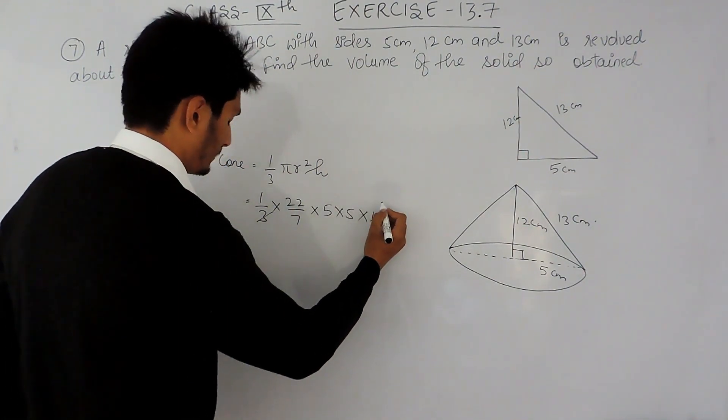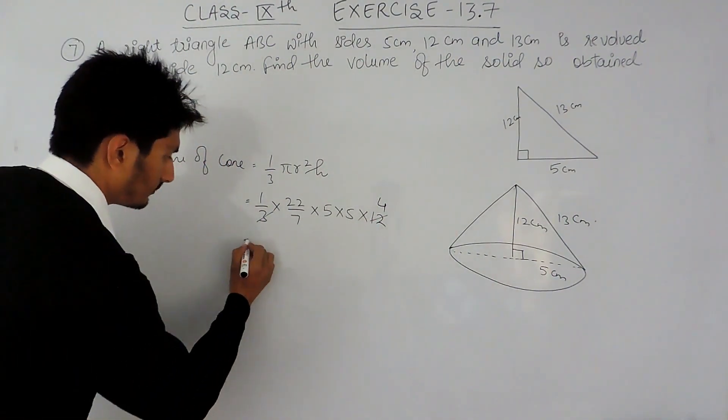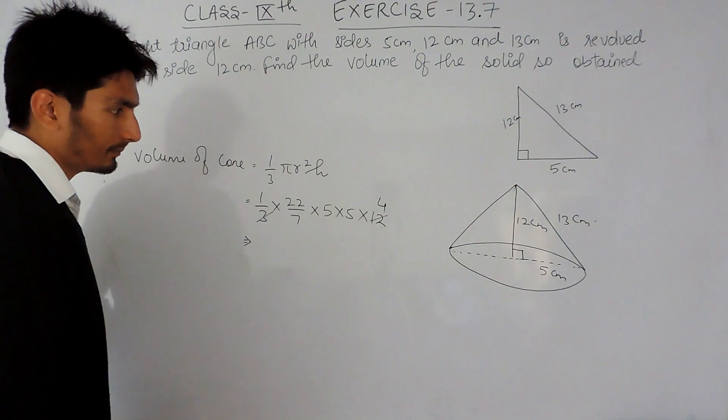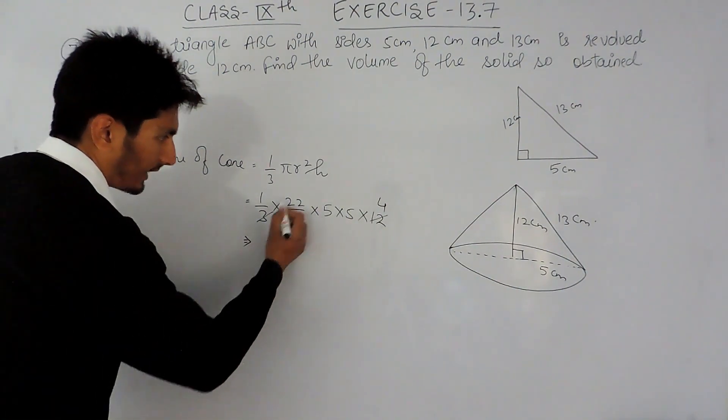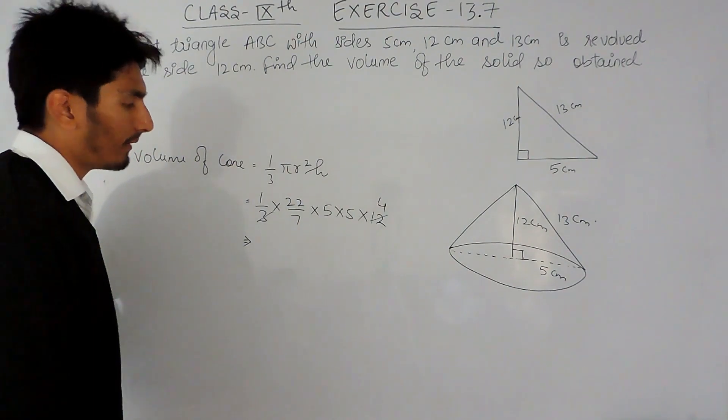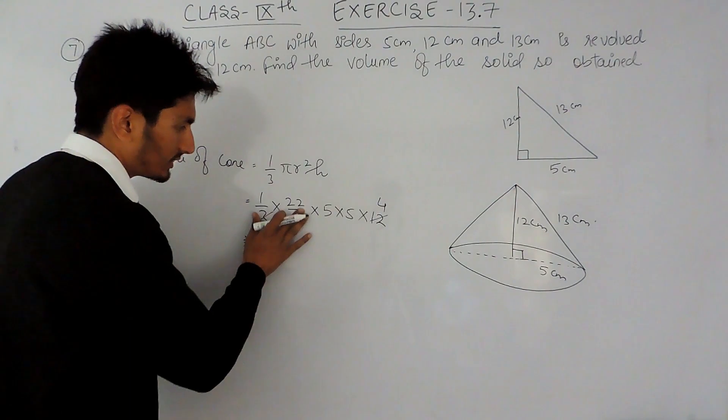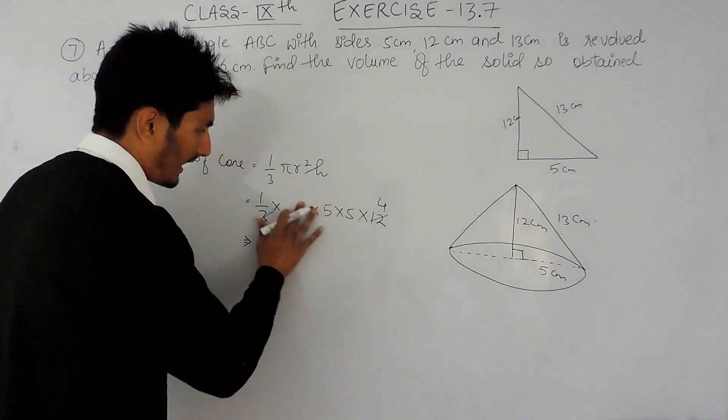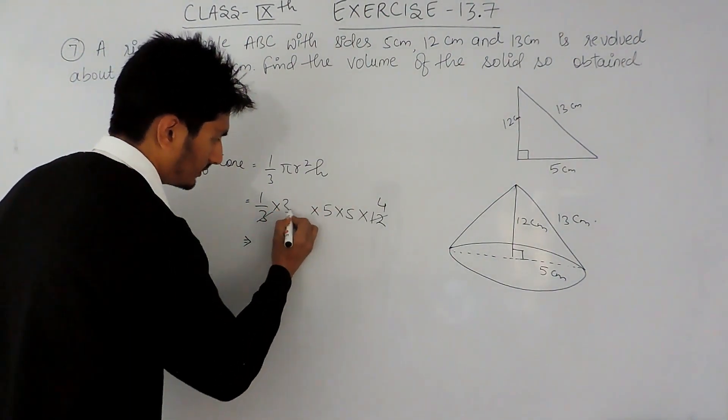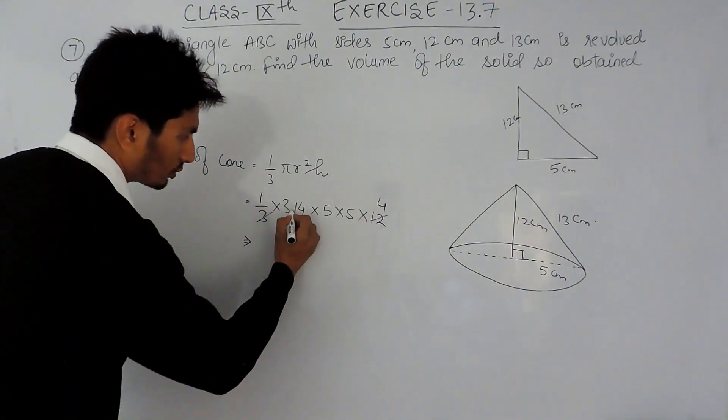Now multiplying this number, 22 upon 7 is the value of pi. Instead of 22 upon 7, if I substitute this value as 3.14, this will make my calculation easier.